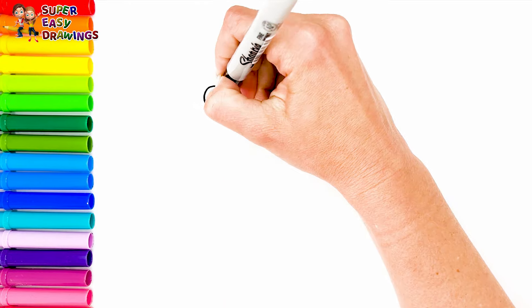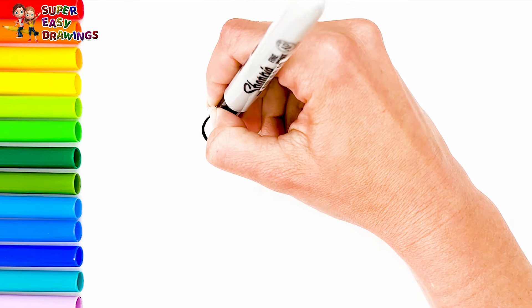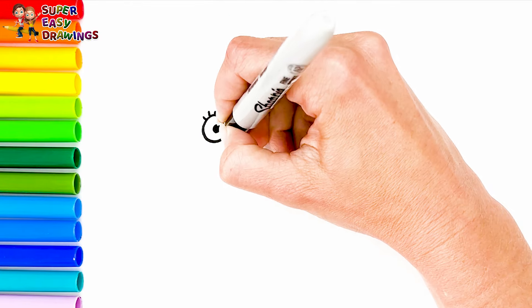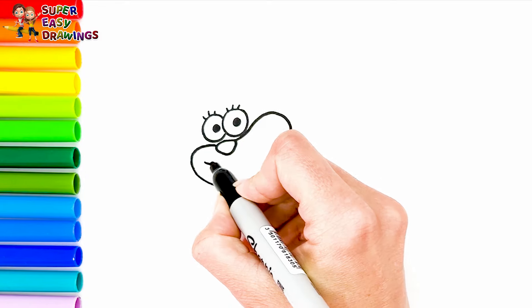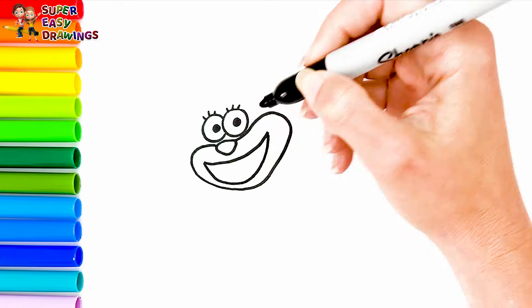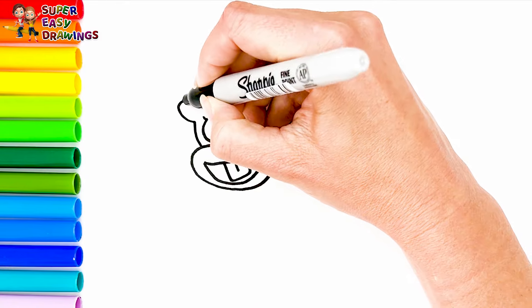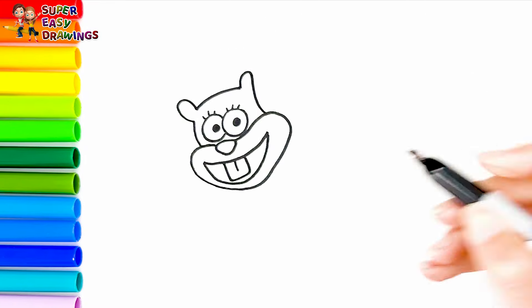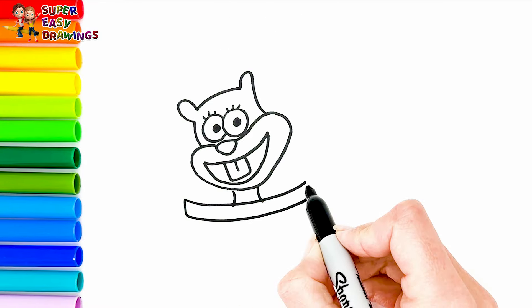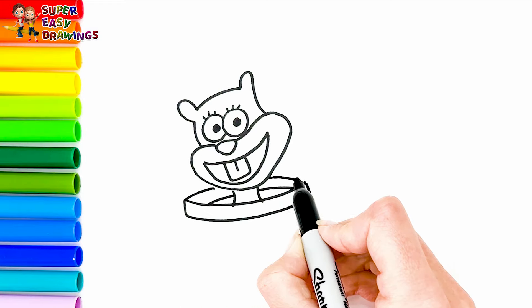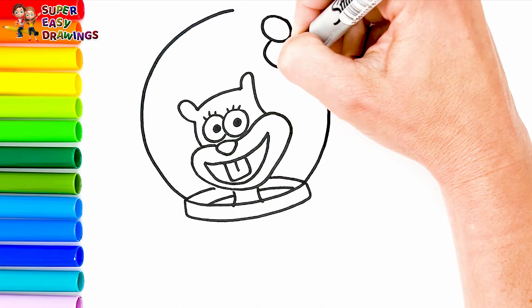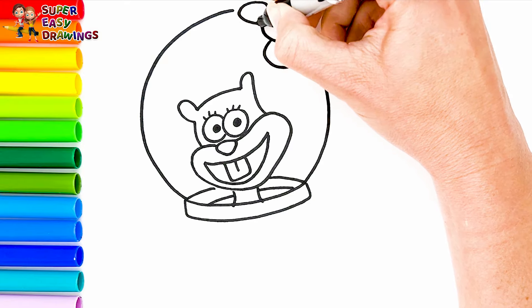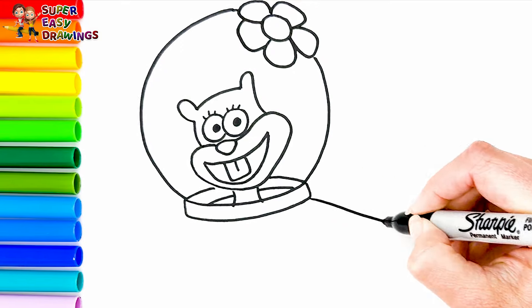Let's draw Sandy Cheeks. I start with her eyes. Then I draw her nose and her smiling mouth. Now I draw her head and ears. She wears a diving suit and lives in a glass dome filled with air to survive underwater. I draw a flower here and her arms.